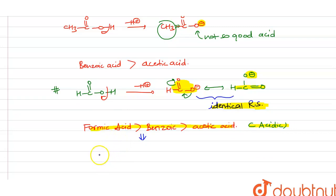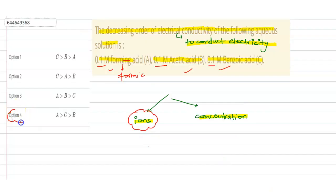So formic acid will have the highest electrical conductivity, then benzoic acid, then acetic acid. The fourth option is correct. I hope you got this concept. Thank you.